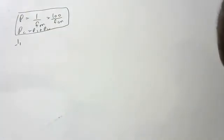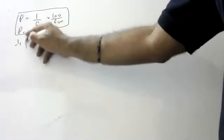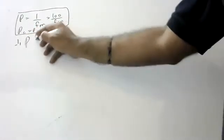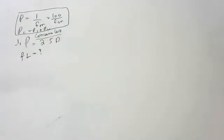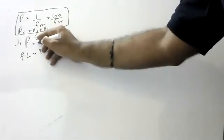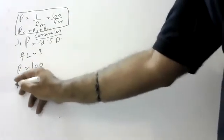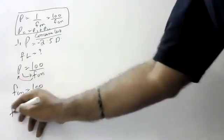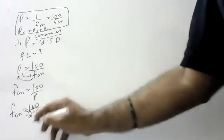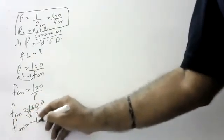First numerical: the power of a concave lens is 2.5 diopters. Find the focal length. Since it is a concave lens, we take negative. So power = 100/f in centimeters, which gives focal length = 100/(-2.5). Focal length = minus 40 centimeters.